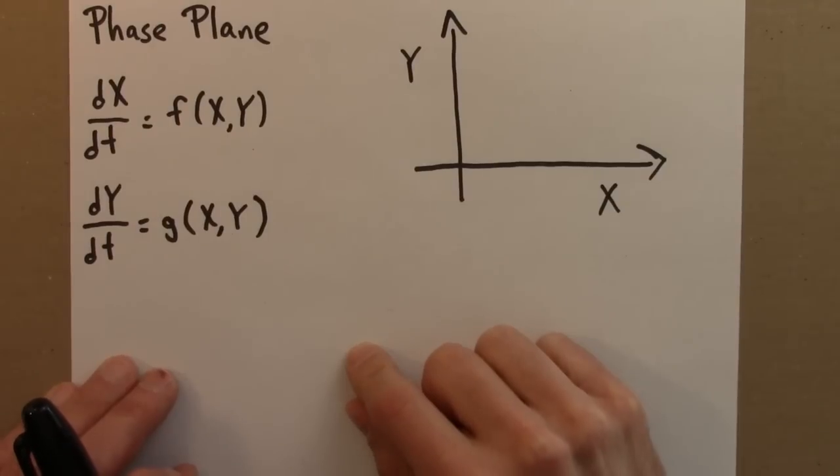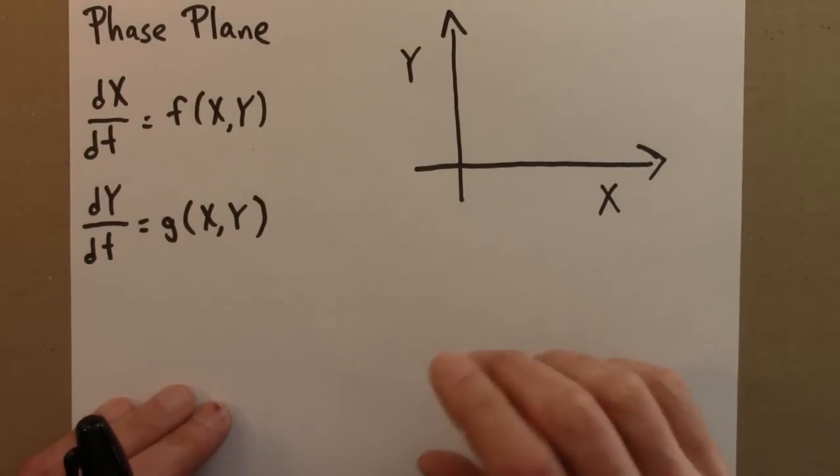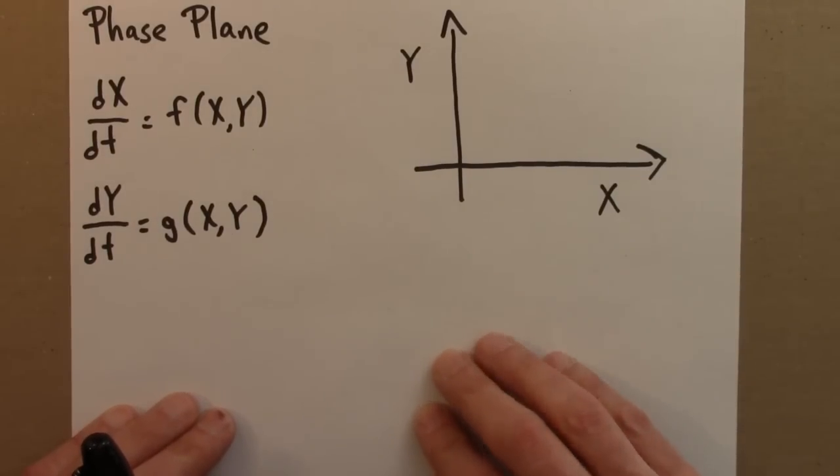In the last video, I presented two examples of a particular solution on a phase plane, going from x and y of t to an xy plot. In this video, I'll discuss properties of the phase plane a little bit more generally.